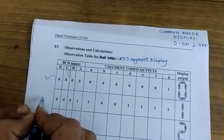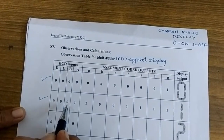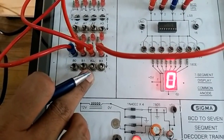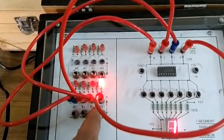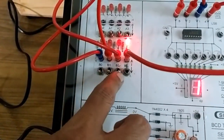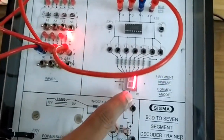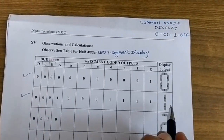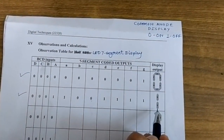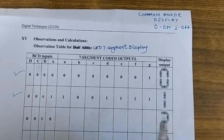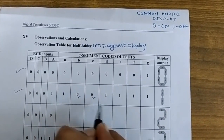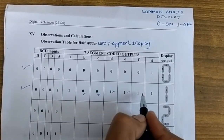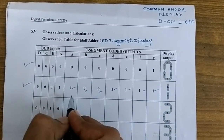Now let us apply the second possible input combination: 0 0 0 1. The first three switches are 0 and the LSB is made 1. The output obtained is digit 1. For digit 1, only segments B and C are on, so B and C have logic 0 levels. The remaining segments are at logic high because they need to be turned off.